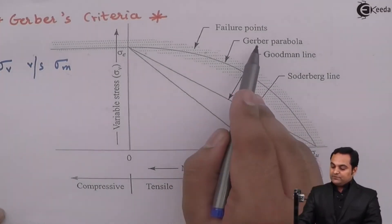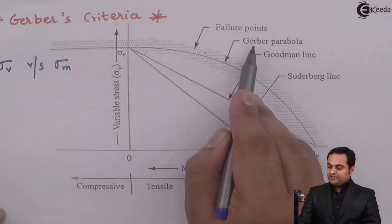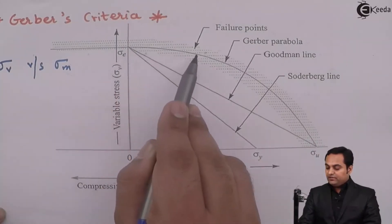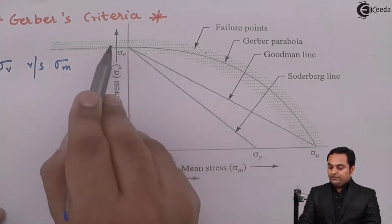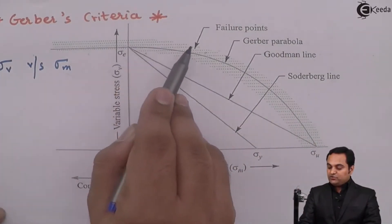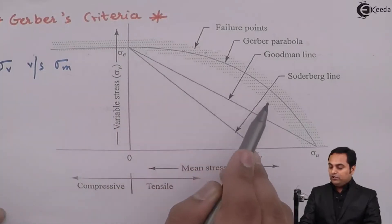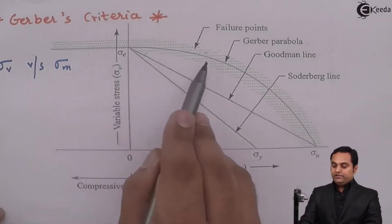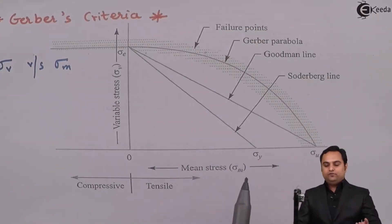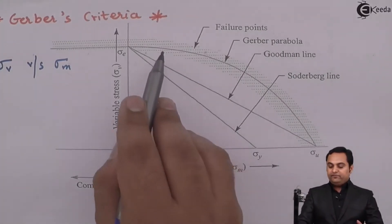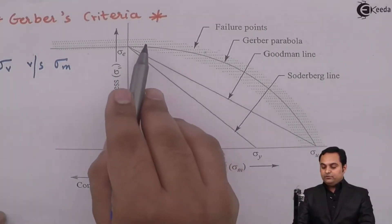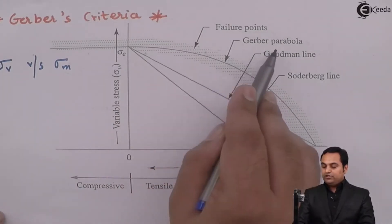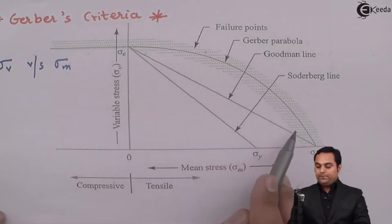As we can see, there is a Gerber parabola. The points which are closer to the parabola are called failure points, because when the element was subjected to some kind of load and it failed, those stress values were plotted and they came closer to the Gerber parabola.